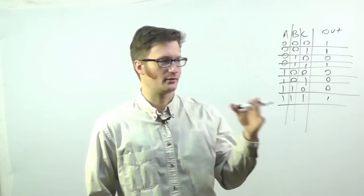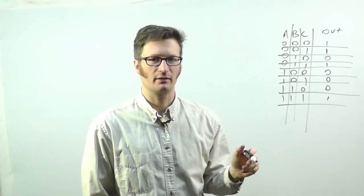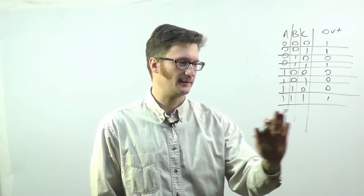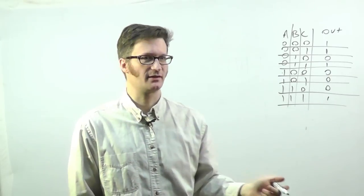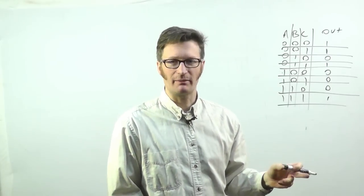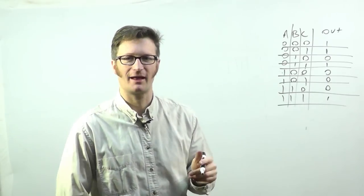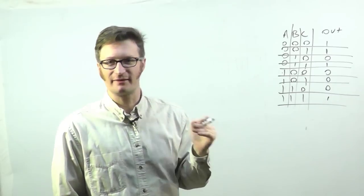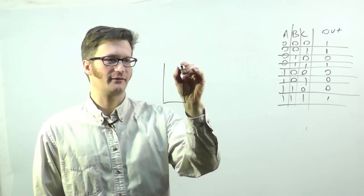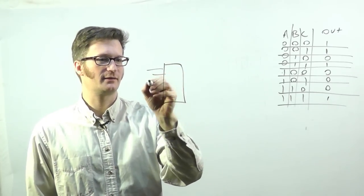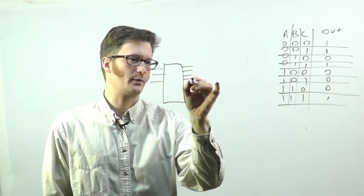I could do my whole Karnaugh map and figure out a very simple logic function, or, well, Boolean logic expression that I could then turn into gates, but maybe I'm feeling lazy. Maybe I don't have the right gates for that. For whatever reason, this isn't the most efficient way to do it, but it will work. I could have my three input decoder, and here are my eight outputs.